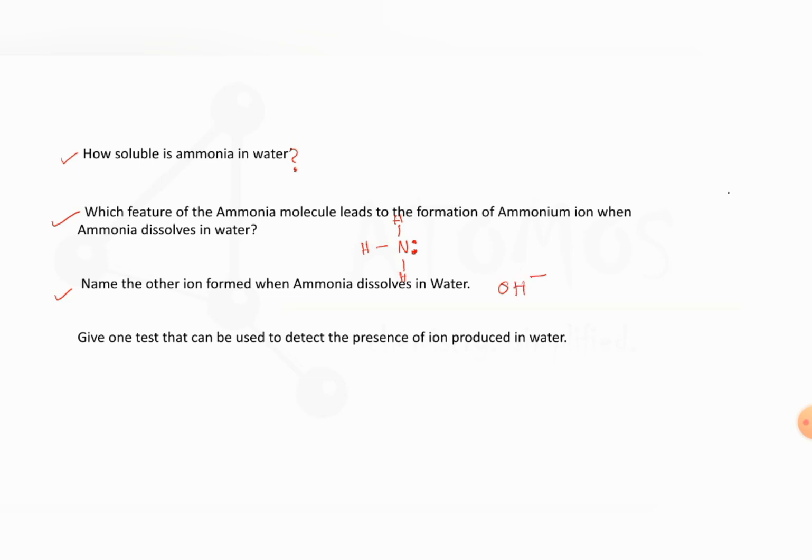Next one: Give one test that can be used to detect the presence of ion produced in water. They are asking whenever ammonia gas is passed into water, what will happen to that solution. We should understand and remember that the solution will become basic because of the formation of hydroxyl ion.